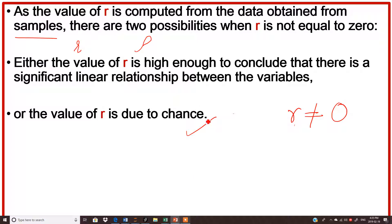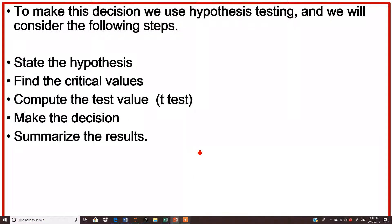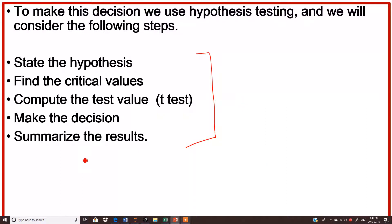To find out which possibility is true, we use hypothesis testing. There are five points to consider: first, define the hypothesis; second, find the critical value with the help of a table; third, compute the test value using a t-test; fourth, make a decision; and fifth, summarize the results. I will show you all five steps with the help of an example.